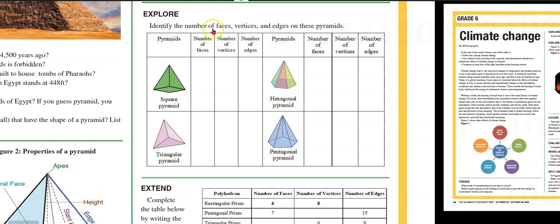Let's explore. Identify the number of faces, vertices, and edges on these pyramids. Here we have the name of the pyramid, number of faces, number of vertices, number of edges. The pyramid again, and we have it there. So here we have a square pyramid. You need to say the number of faces, vertices, and edges.